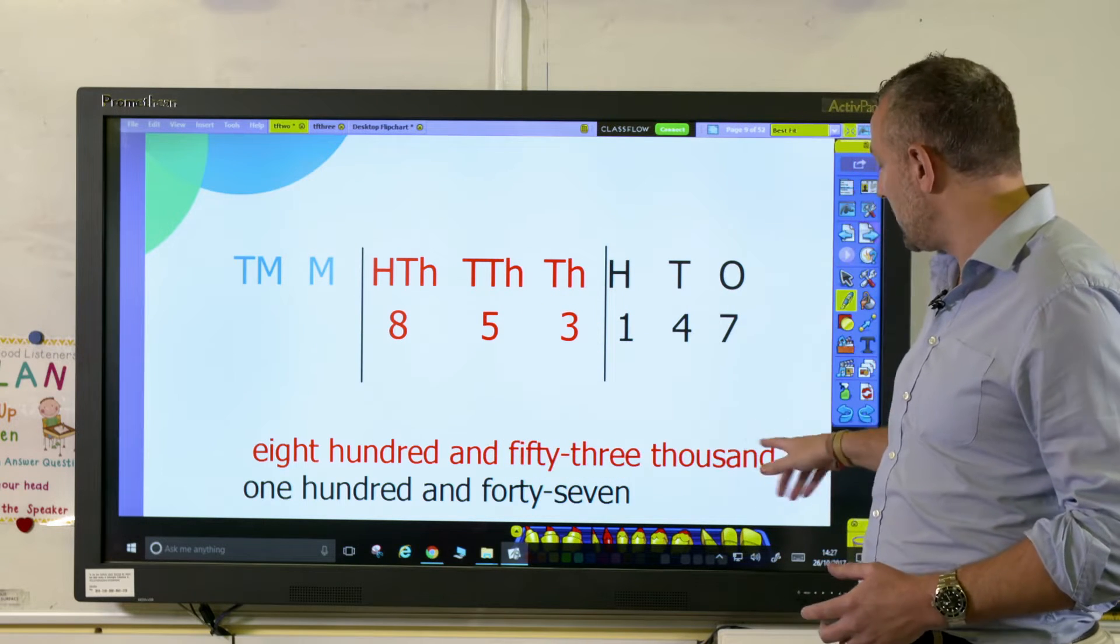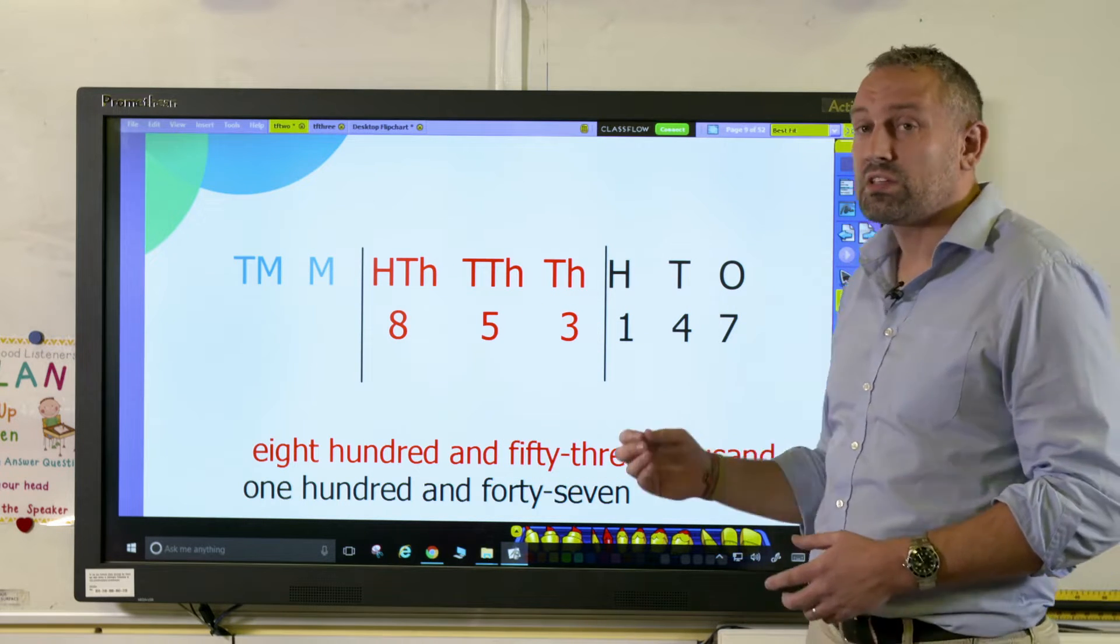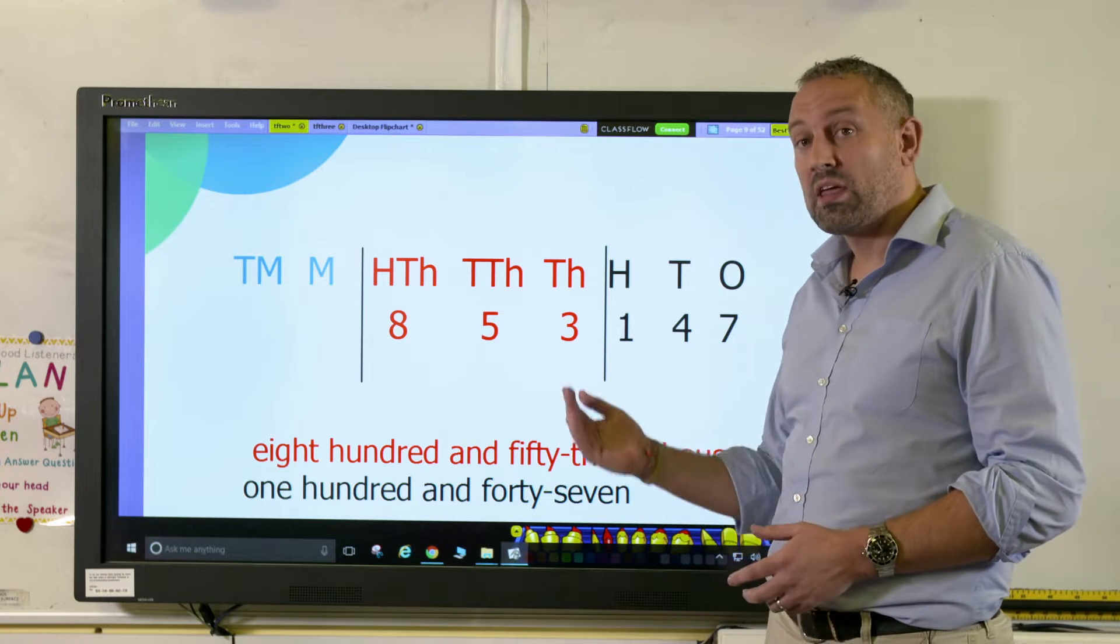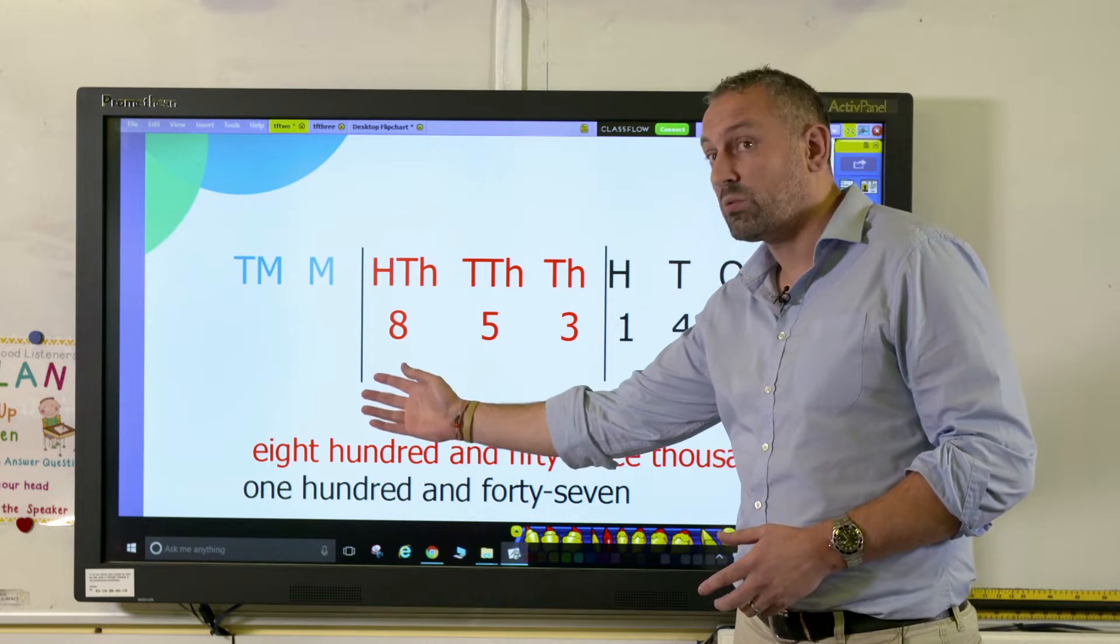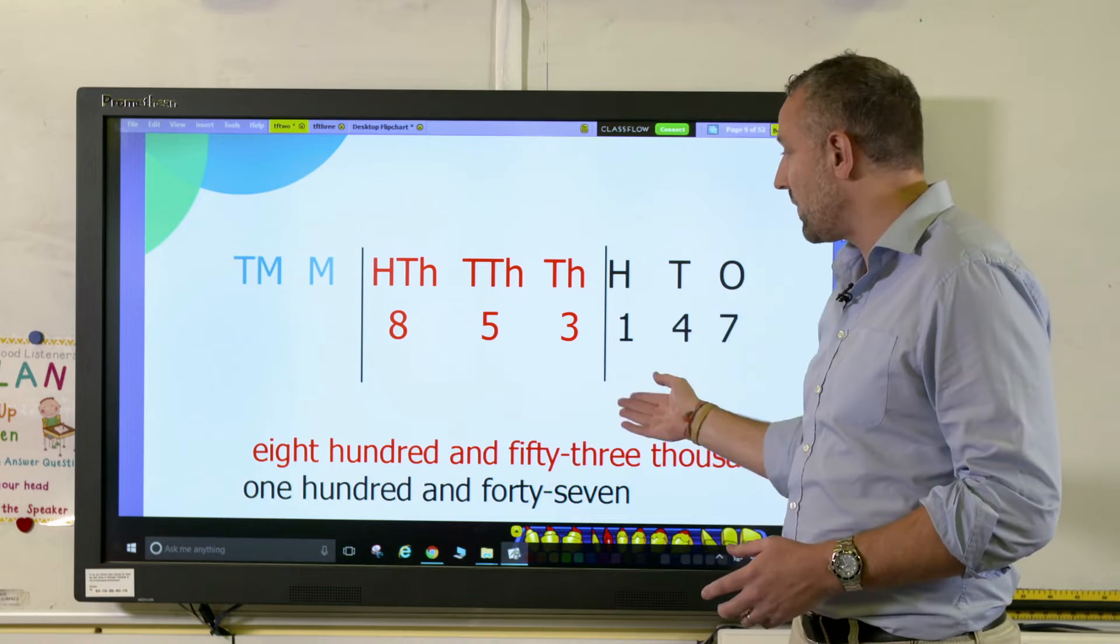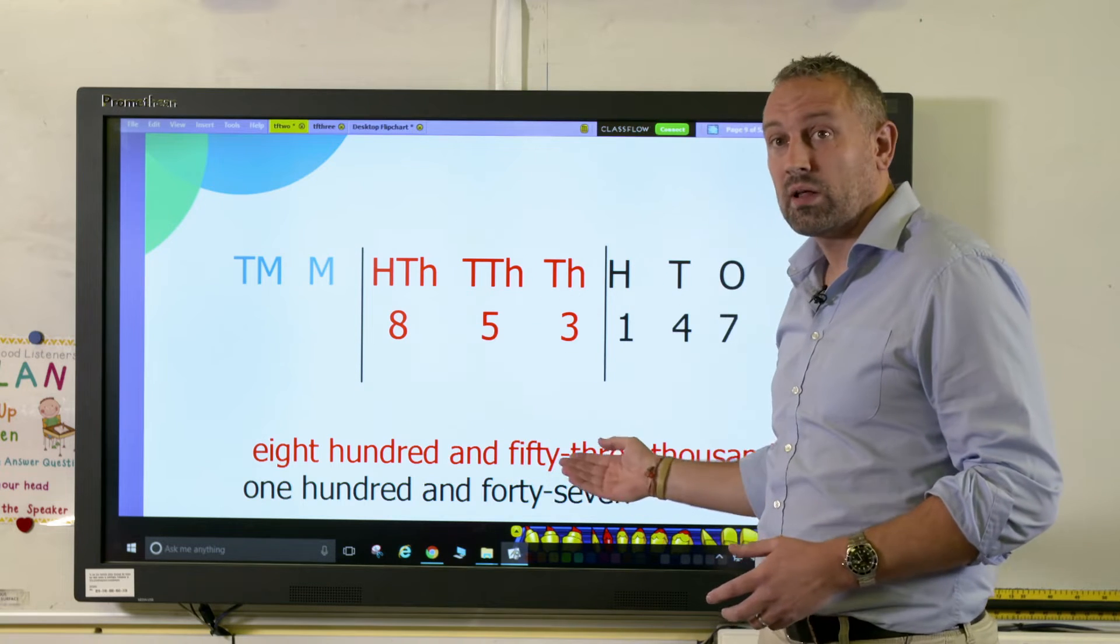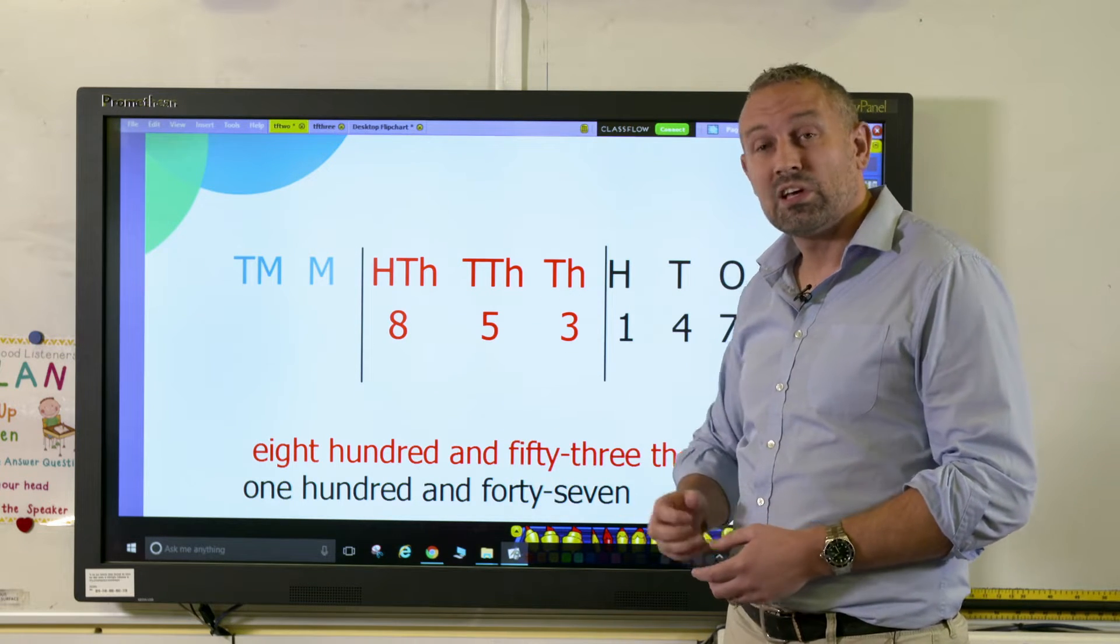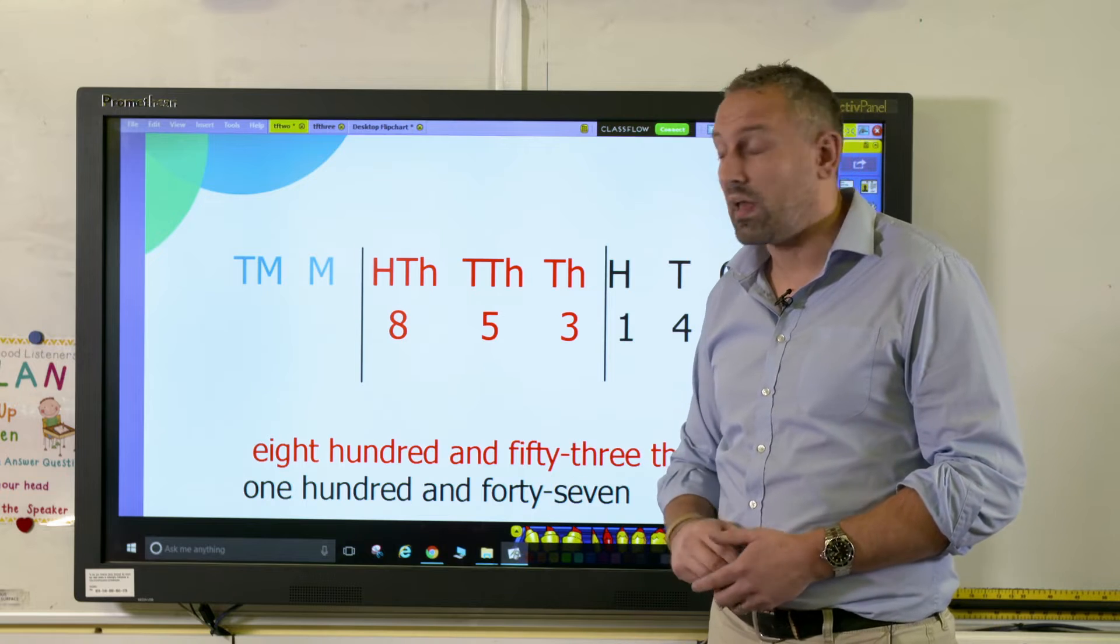You've seen from when it's written, we now have a comma, and it's a really good tip for the children to see that where we would break for the thousands or the millions, which are thousands of thousands, we have that comma where the line is as well. And that really helps them to break down the numbers, especially if we get zeros, as we will later.